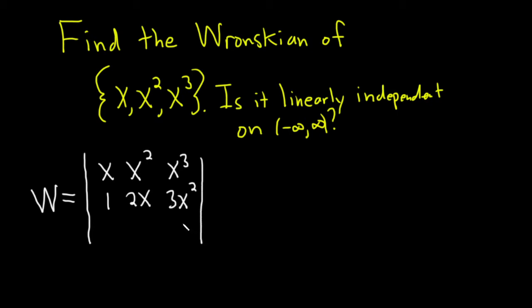In the third row you take the derivative once more. The derivative of 1 is 0, the derivative of 2x is 2, and the derivative of 3x squared is 6x.